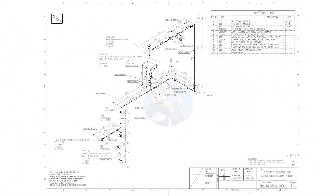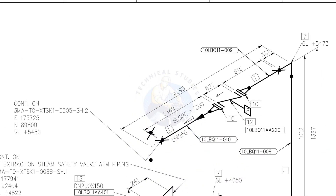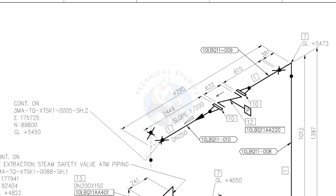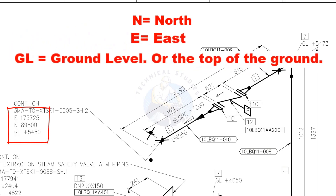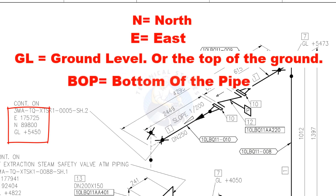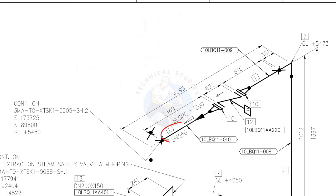Let us go to the drawing. This drawing is the continuation of the previous drawing. See the coordinates: N means north, E means east, and GL means ground level — the top of the ground. GL and BOP are the same here; BOP means bottom of pipe. DN 250 means the nominal diameter of the pipe is 250, which we already know is equal to 10 inch NB.